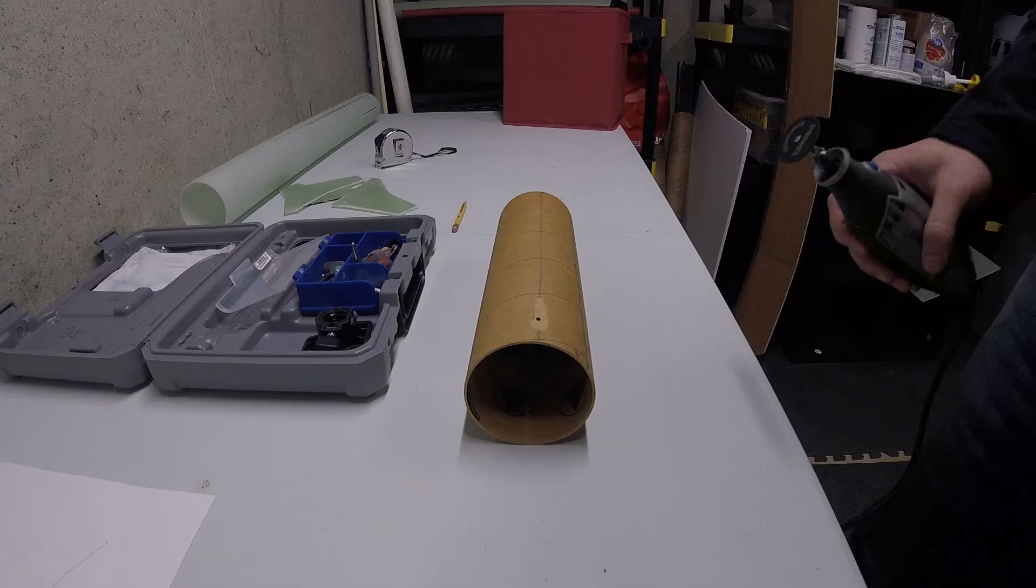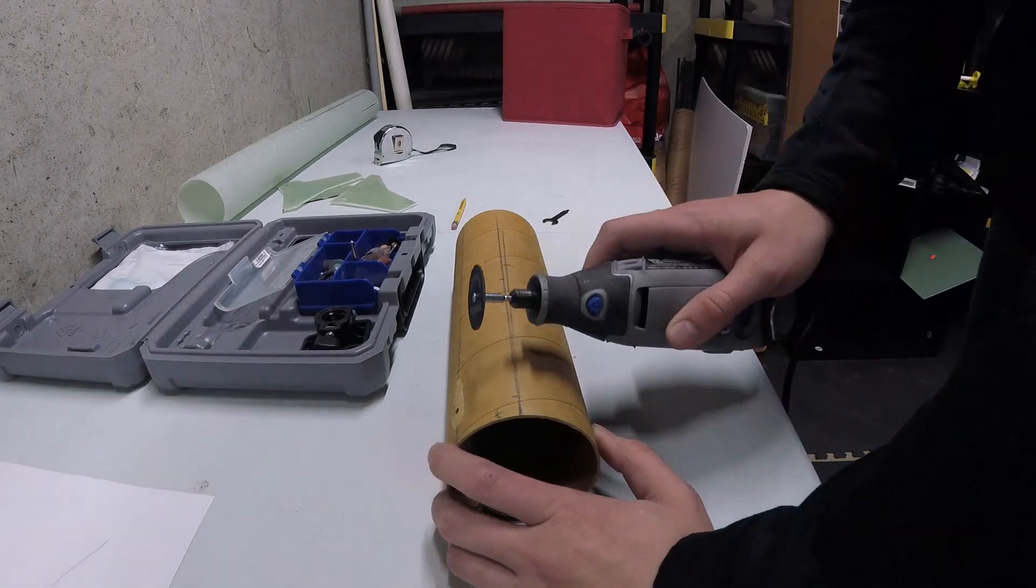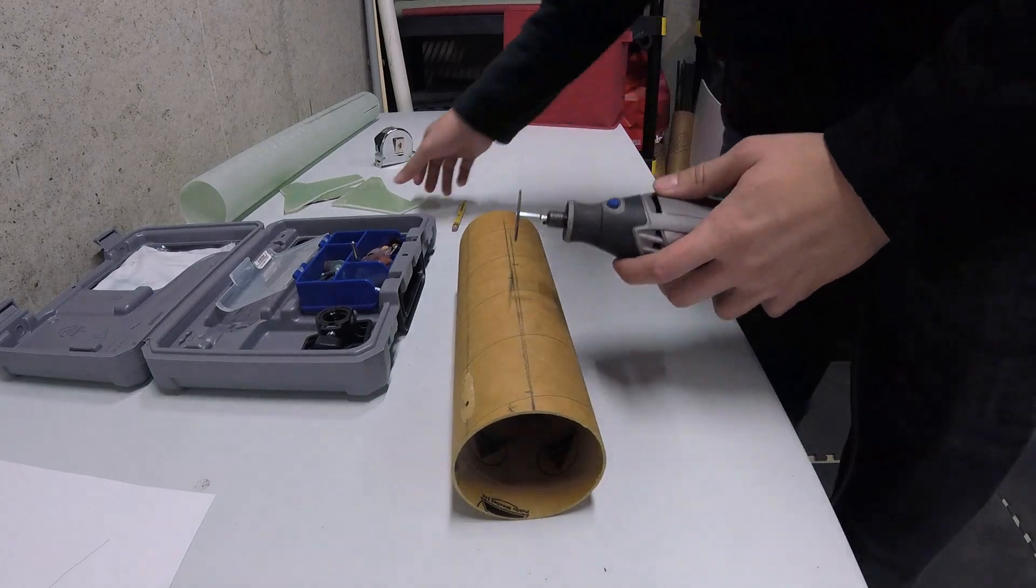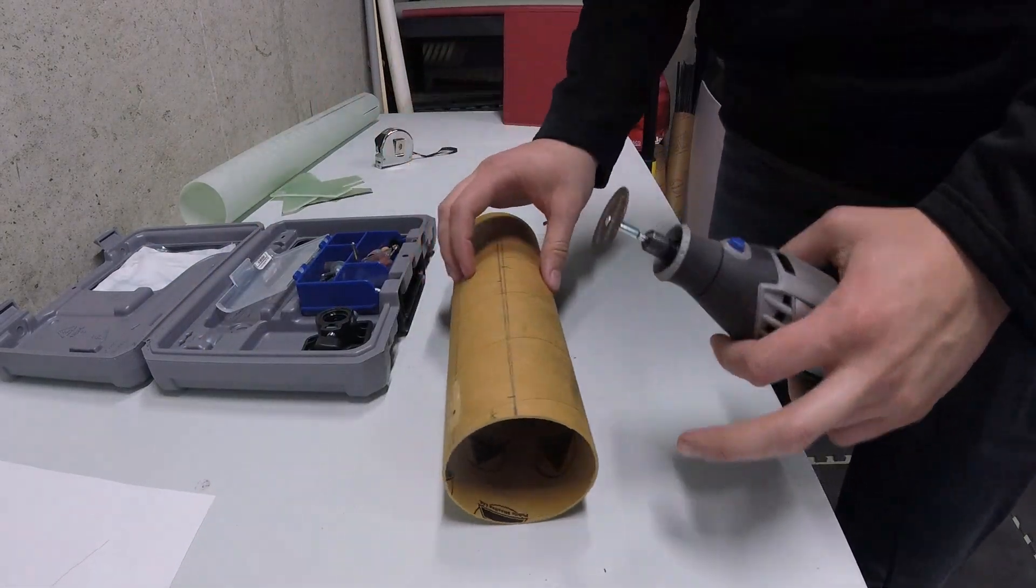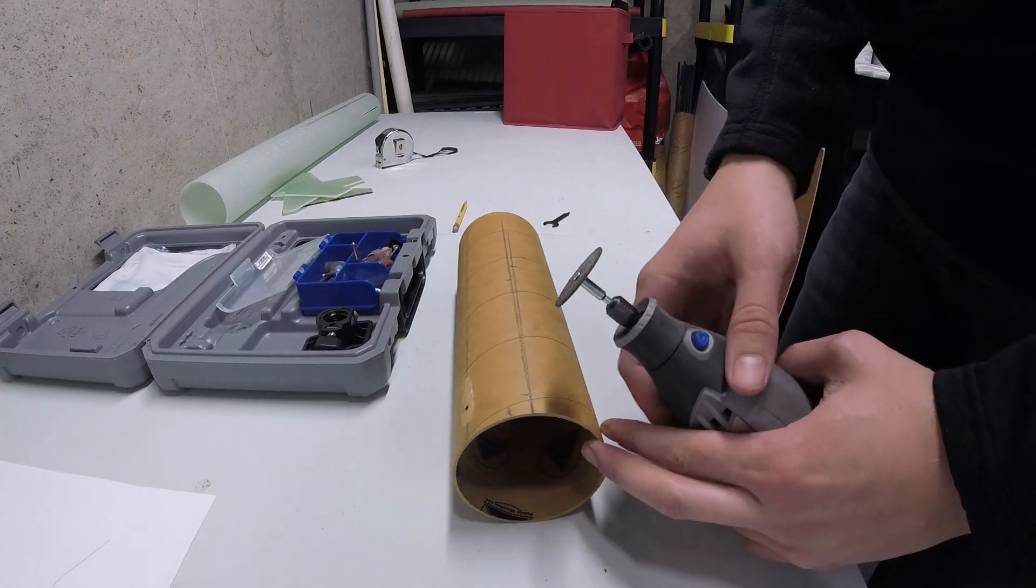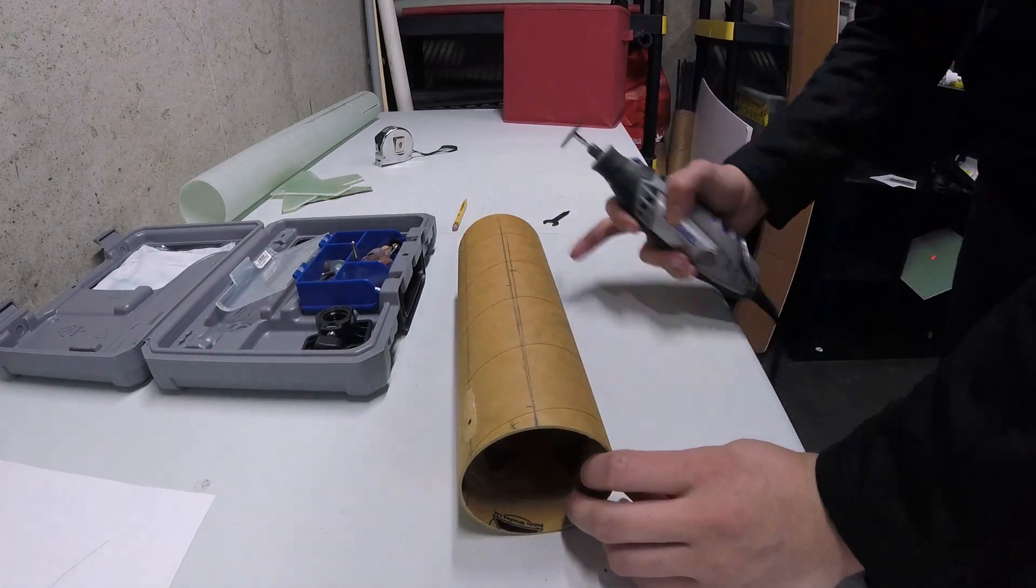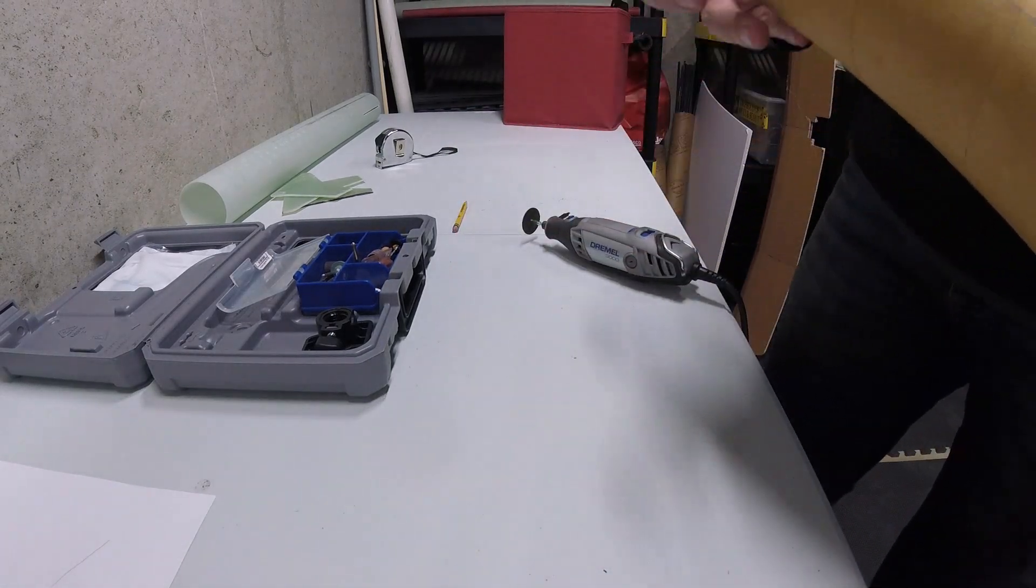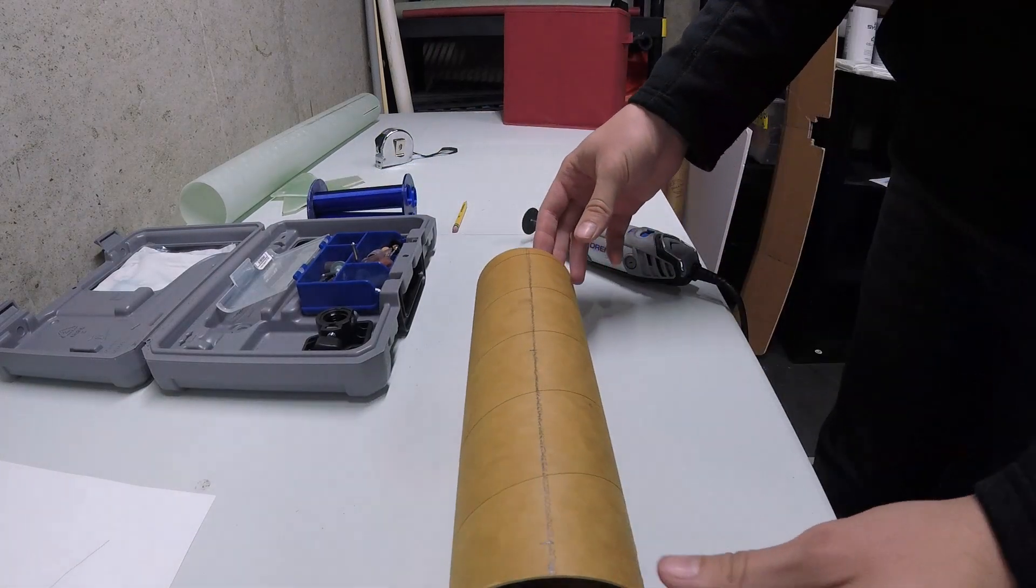Alright, so now that you have it marked out, the next thing is you get your Dremel out. You're going to actually cut the slot, and you'll want something to test the width of your slot. I've actually got a fin from Infinity out here, and I'll use that to test my slot since I'm going to be using similar fins on this rocket, even though this is just a prototype.